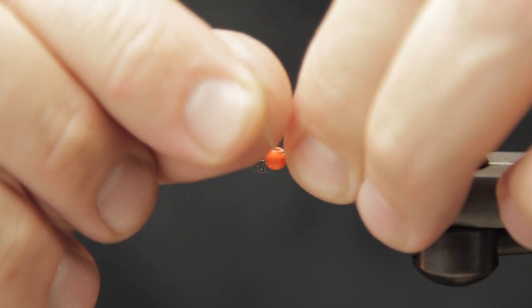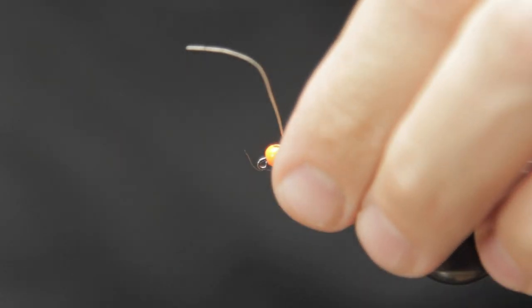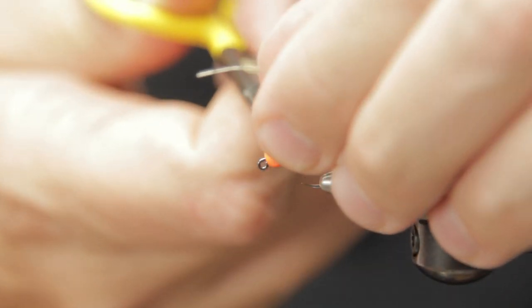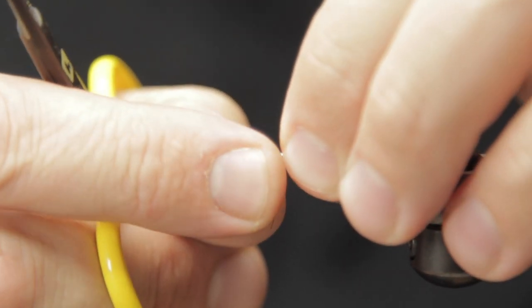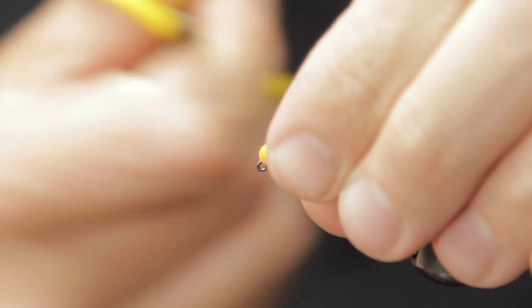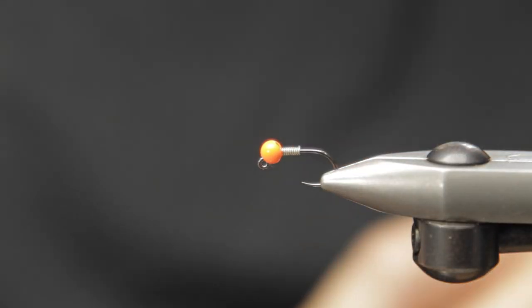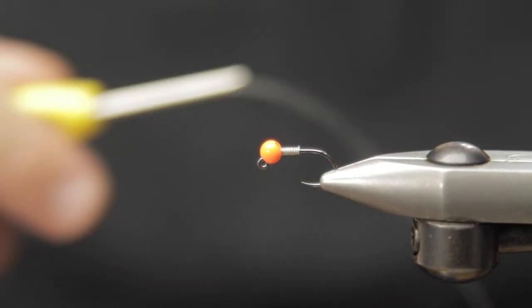We'll do about 10 to 12 turns and we're going to shove that wire into the bead. It's going to hold it in place and create a very nice little ramp up for our thorax.